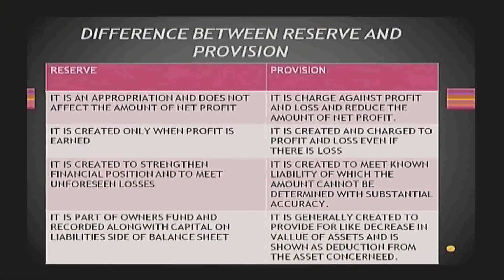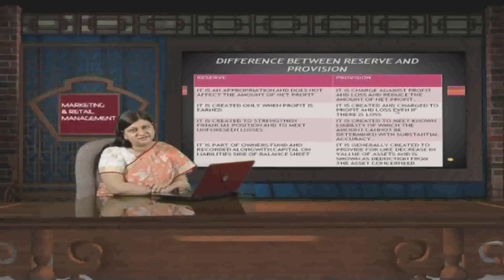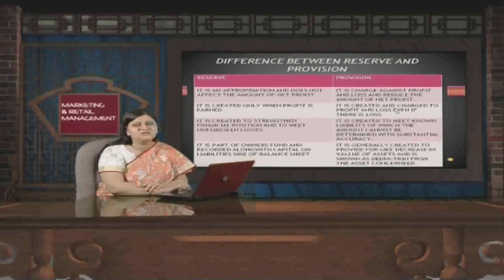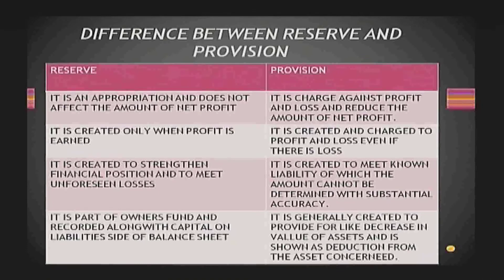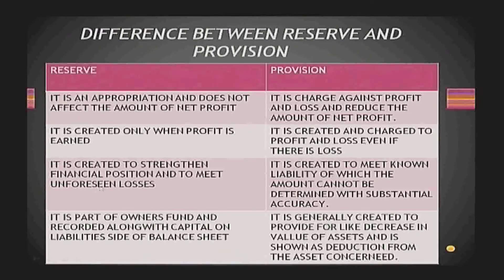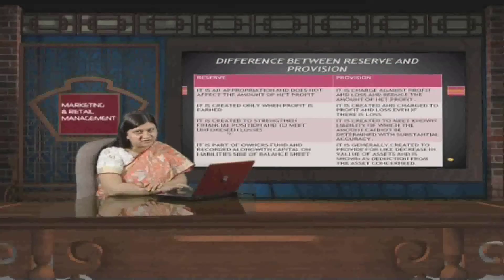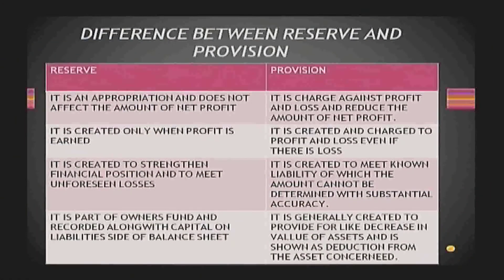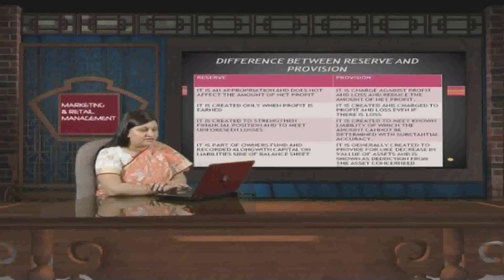Provision is created and charged to the profit and loss account even if there is a loss — it has nothing to do with available profits. It is based on the principle of prudence: we provision for expected losses, while anticipated incomes are not provisioned for. Reserves are created to strengthen financial position and to meet unforeseen losses, while provisions are created to meet known liabilities whose amounts cannot be determined with substantial accuracy.